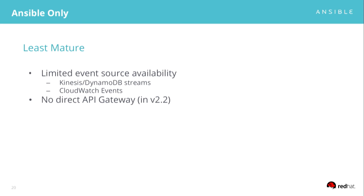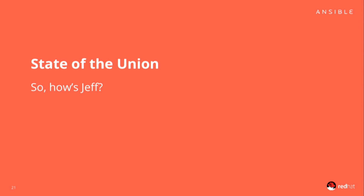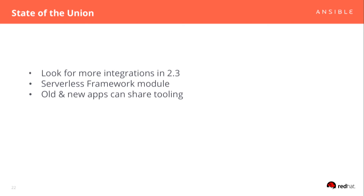We do pretty frequent releases, so expect to see a lot more. Look for our 2.2 release coming out on Monday and our 2.3 release a couple months after that. In 2.3 we're going to have the Serverless framework module, API Gateway support, and more event sources — so basically look for Ansible to continue expanding event support and integrations with cloud providers. If you run a serverless platform, come talk to me and I can help you get your module into Ansible.